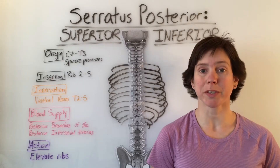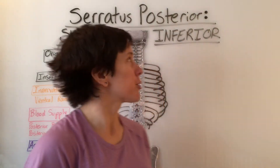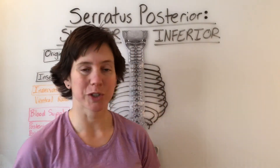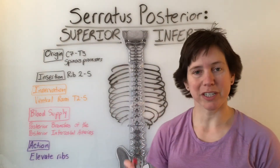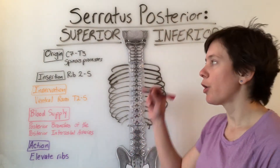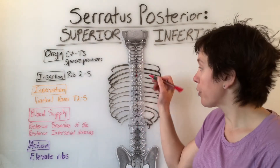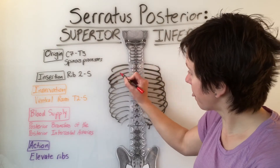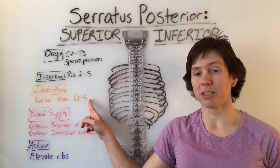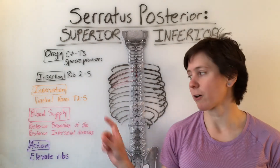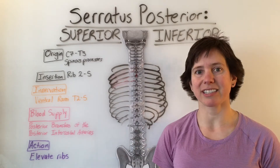Here we are going to go over two muscles: the serratus posterior superior and the serratus posterior inferior. Starting with the serratus posterior superior — it originates on the spinous processes of C7 through T3 and inserts on ribs 2 through 5. The innervation is ventral rami T2 through T5. Blood supply comes from the posterior branches of the posterior intercostal arteries, and the action is to elevate the ribs.